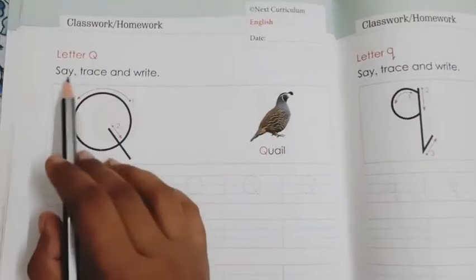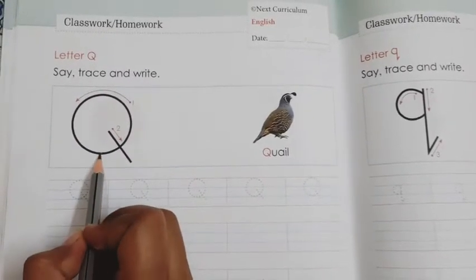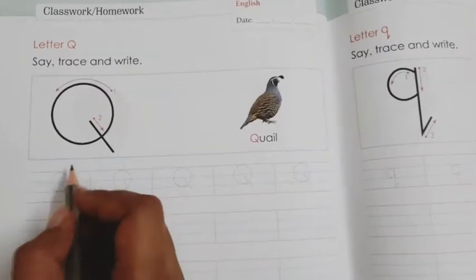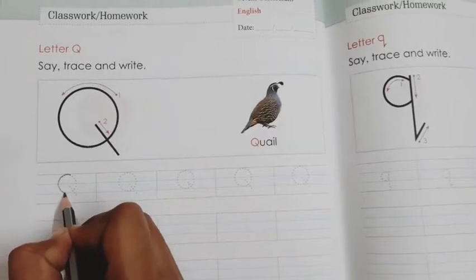Here letter Q, say trace and write. Okay, so first as you can see, this is the capital Q. Q says q, q, qu, qu, quail. So here we have to do tracing like this as we have done in book number 5.